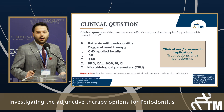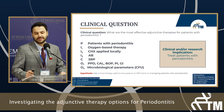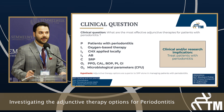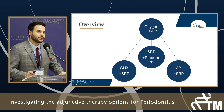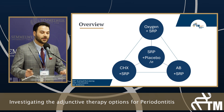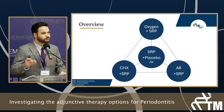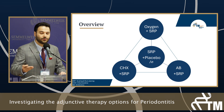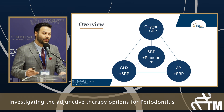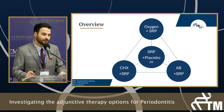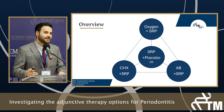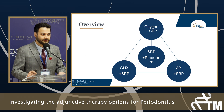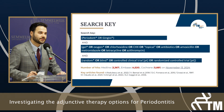Our clinical implication is to treat patients with periodontitis. This is a general overview showing that I am not only comparing these interventions — oxygen, chlorhexidine, and antibiotics — against scaling and root planing alone or with placebo, but also comparing chlorhexidine, oxygen, and antibiotics together in a network meta-analysis format.